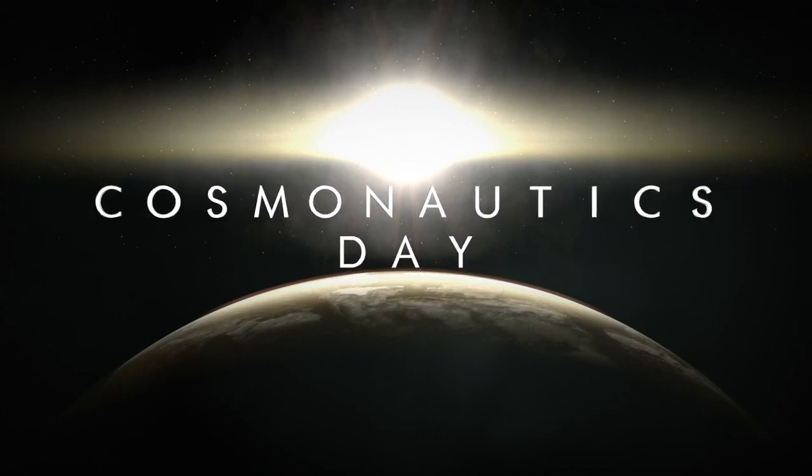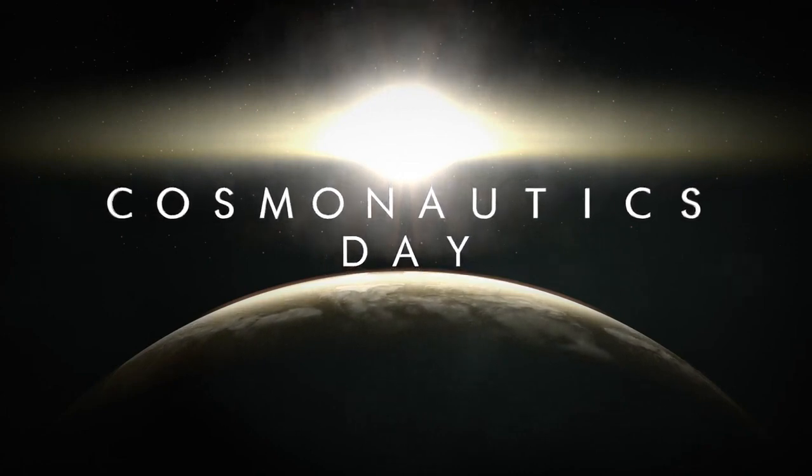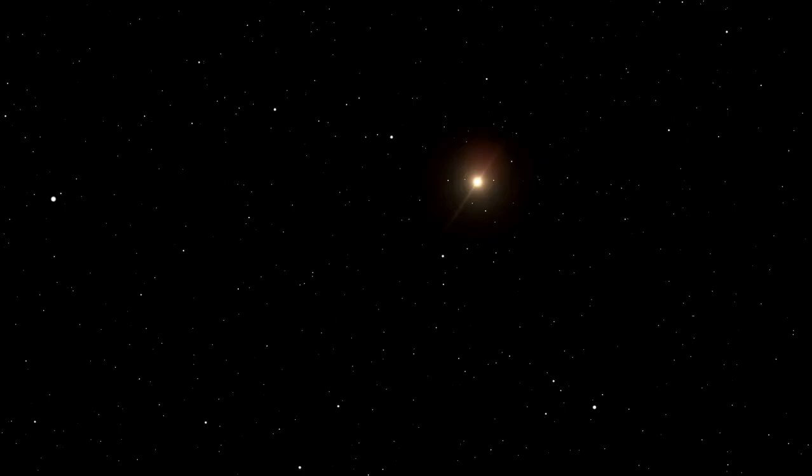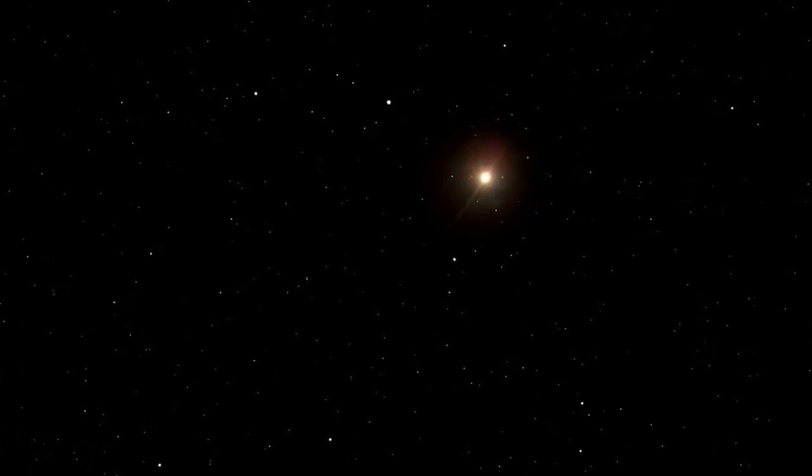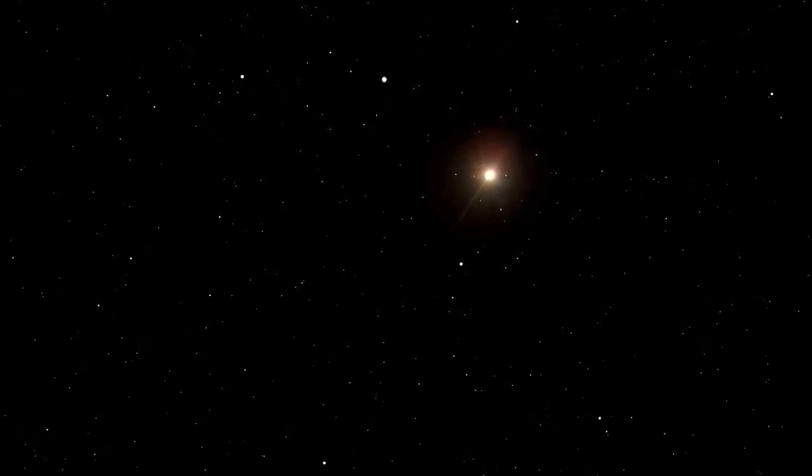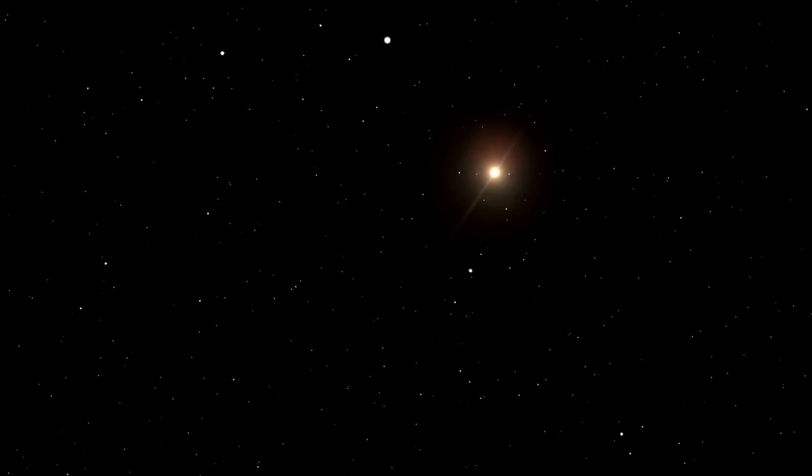Stars, while appearing calm and steadfast from Earth's vantage point, are anything but tranquil. Betelgeuse, long classified as a pulsating red supergiant, is a dynamic star whose brightness varies in cycles ranging from 10 to over 2,000 days.